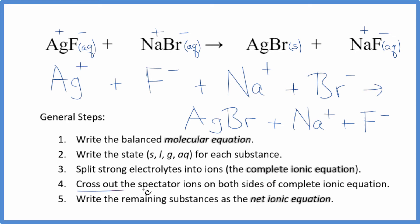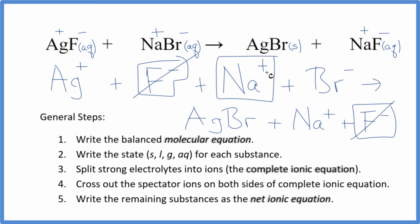Now we can cross out the spectator ions. They appear on both sides. So I can see in the reactants here, I have the fluoride ion. I also have it in the products, so I can cross that out. That's a spectator ion. I also have the sodium ion right here in the reactants and again in the products. Cross that out. Spectator ion.